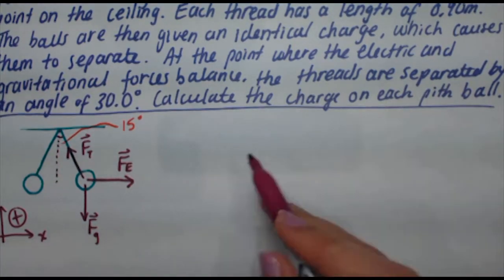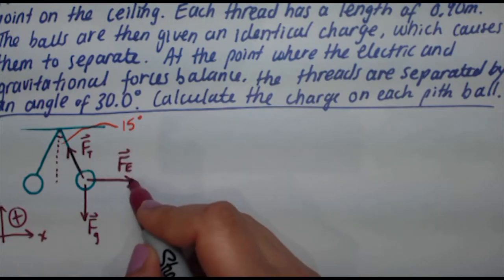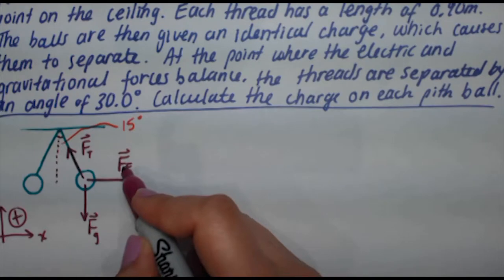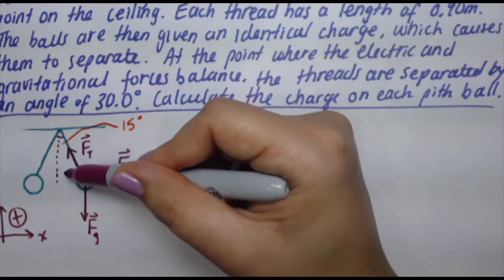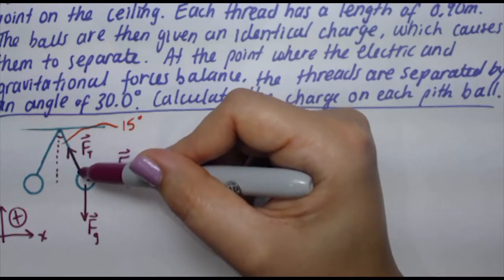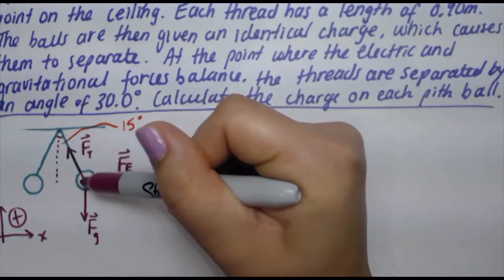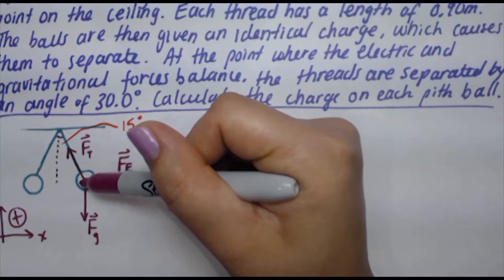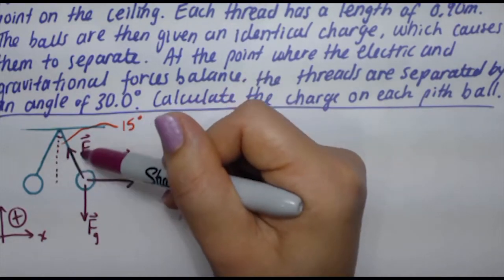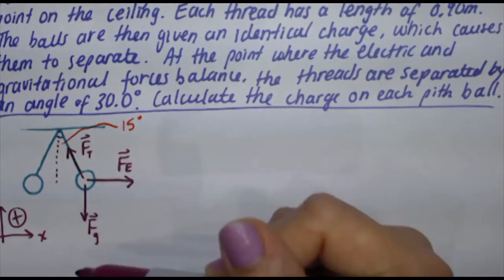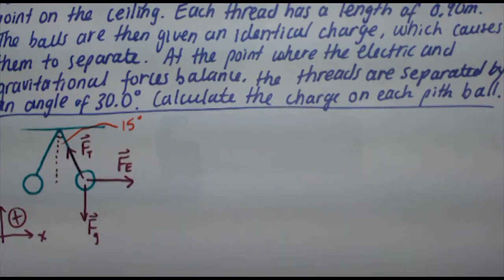This is the thought process you have to go through to figure out this problem. We're asked to calculate the charge on each pith ball. Charge you get from the electric force, K Q1 Q2 over r squared. But to find the electric force, we have to find the x component of the tension. The electric force is going to come from the balance of the horizontal tension, FTX. But how do we find FTX? To find FTX, we need FTY, which we're going to find using force of gravity. So that's our three-step process.